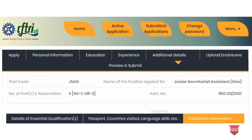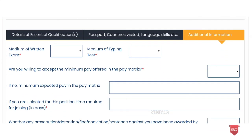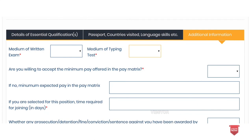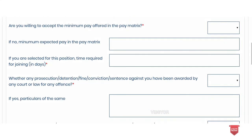In step 3, we are going to add additional details. We will use the medium of written exam — you can choose the exam in any language. We will also select the medium for the typing test. Options include Hindi or English. You will also be asked: are you willing to accept the minimum pay offer in the pay matrix? If selected, you can fill in the salary field — that means yes.